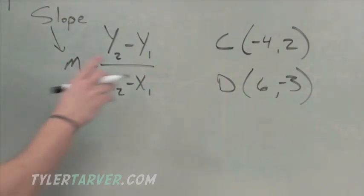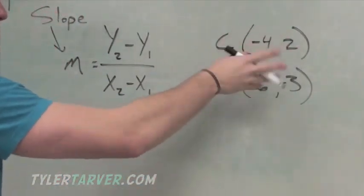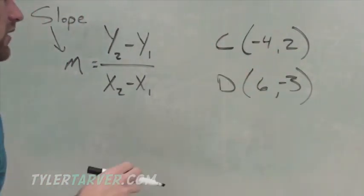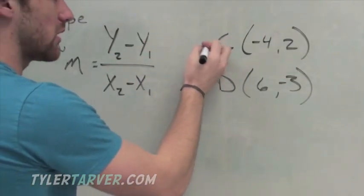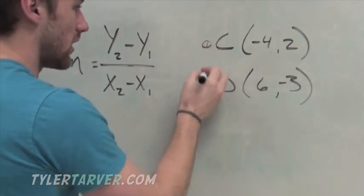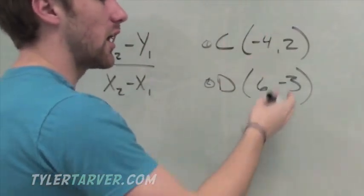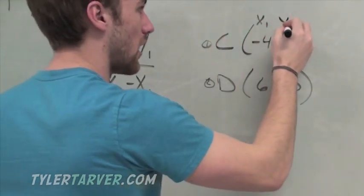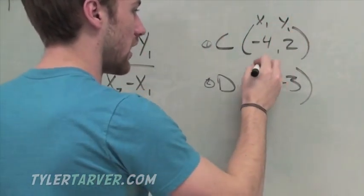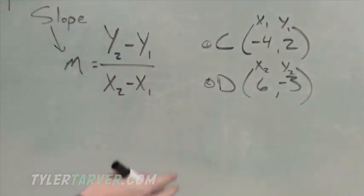So all we do is we label our stuff because it's easy to get confused with these numbers in the front and the back. Don't get scared. We just label it. We pick our one and our two. I would say c is our one because it's on top, and d is our two. X is always our first number, Y is always our second number. So we just do x one, y one, x two, y two. After we've done that, we've done the hard part. All we got to do is plug it in.